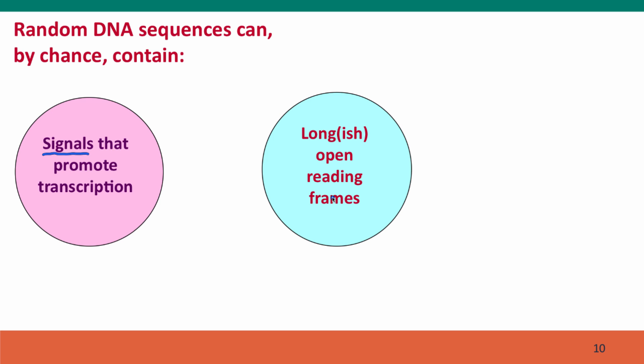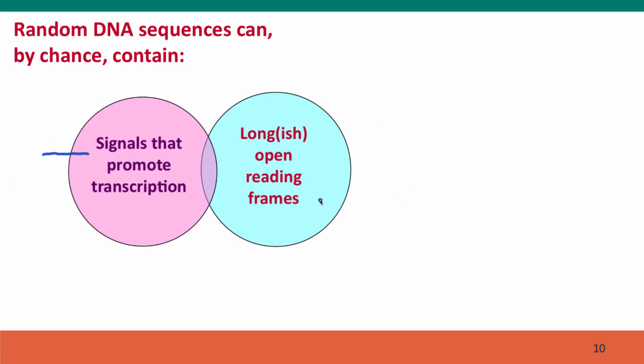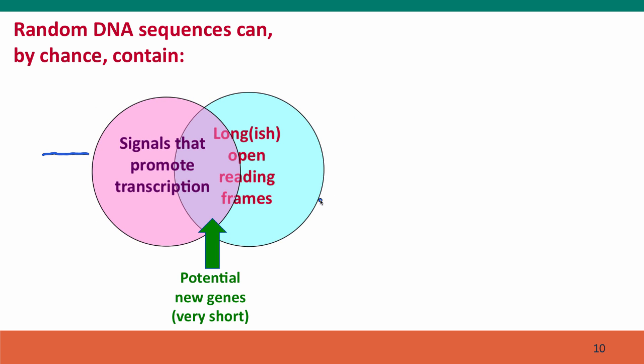Similarly, open reading frames exist all through the genome. Short reading frames — where there's a start codon and then just a little ways over there's a stop codon — are very, very common and normal in DNA sequences. Although most of these are quite short, just by chance some of them will be fairly long, even in sequences that have been mutating randomly for millions of years and have no biological function. If these two kinds of signals coincide — so that there's a transcription-promoting signal just upstream of a by-chance open reading frame — this creates segments of DNA that can be transcribed and translated, and thus can function as new genes.